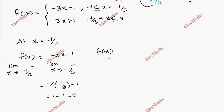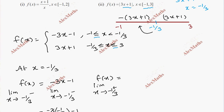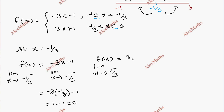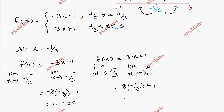For the right-hand limit, x tending to minus 1 by 3 from the right, we choose 3x plus 1. Substituting: 3 times minus 1 by 3 plus 1 gives minus 1 plus 1 equals 0. So the right-hand limit is 0. Also f of minus 1 by 3 equals 0.